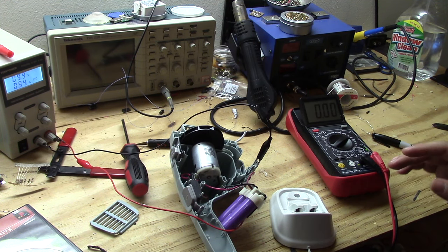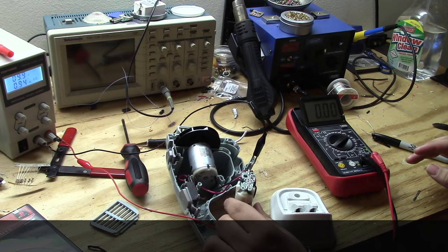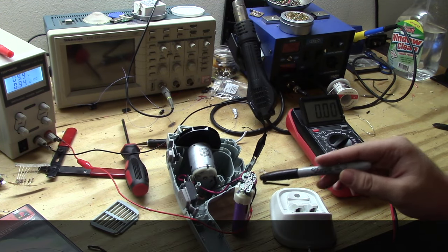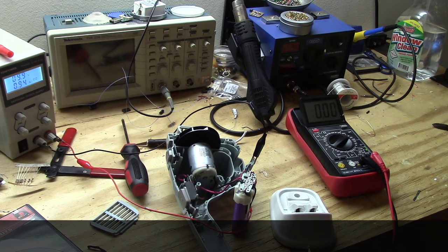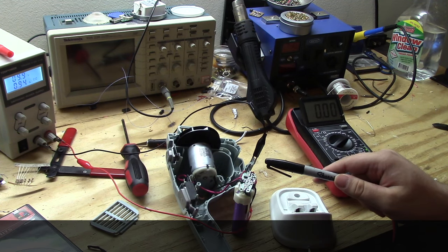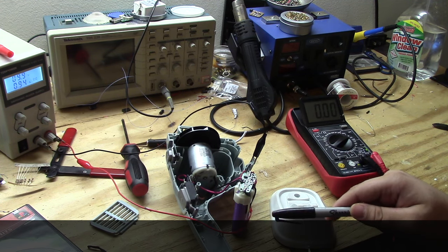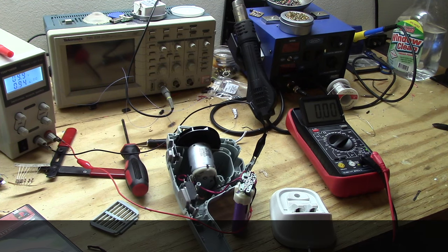Now the good thing about this is that there is probably a reverse protection diode on the charge controller that blocks out that negative input. So no damage was done to the charge controller or the batteries, which is really good. So that means just swapping these wires or contacts would actually fix the problem.